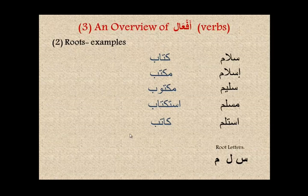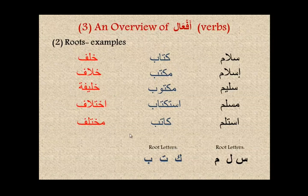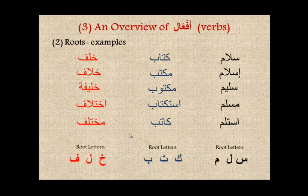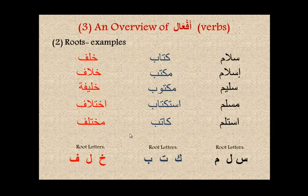Here are examples of the root system. The words salaam, Islam, salim, muslim, and istaslama all share the root letters seen, lam, and meem. A second set — kitaab, maktab, maktoob, istiktaab, and kaatib — all share the root letters kaaf, ta, and ba. A third set — khalfa, khilaaf, khaliifa, ikhtilaaf, mukhtalif — all share the root letters khaa, lam, and fa. These exercises give you a feel for how words can be related by root letters.